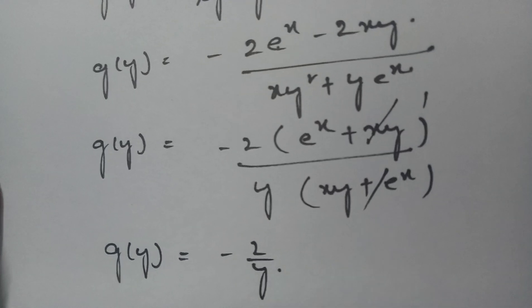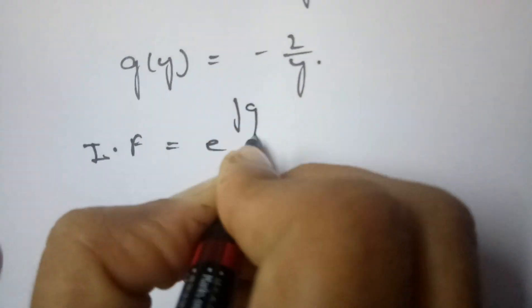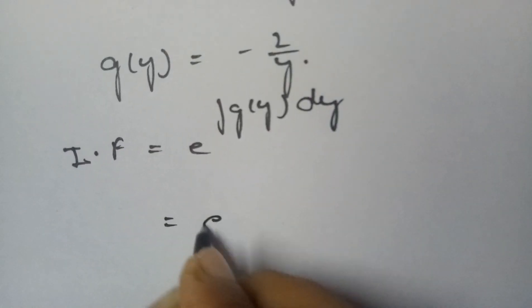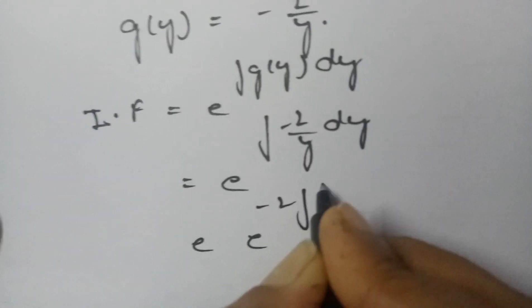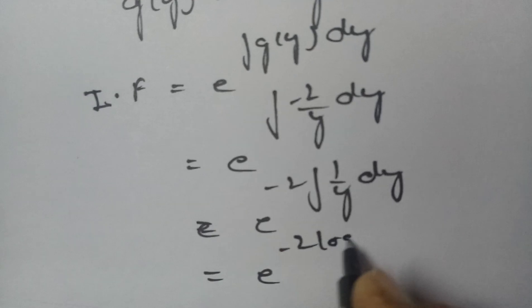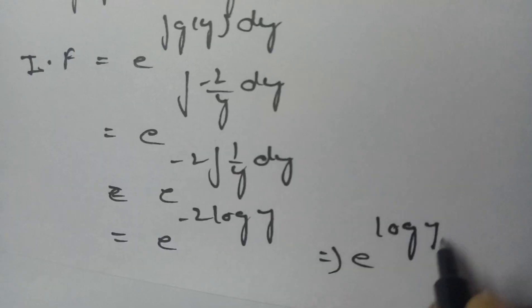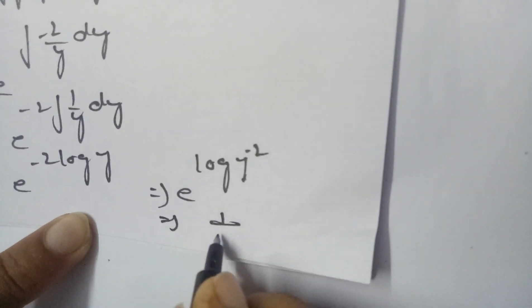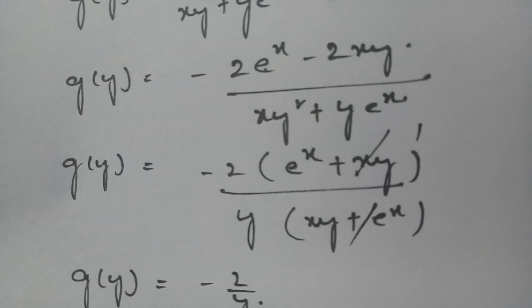The integrating factor is e to the power of integral G(y) dy = e to the power of integral (−2/y) dy = e to the power of −2 log y = e to the power of log(y⁻²) = y⁻² = 1/y². So the integrating factor is 1/y².